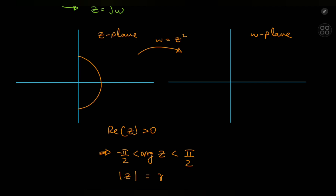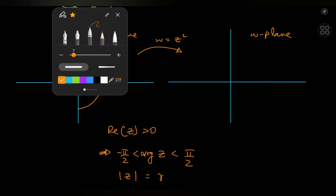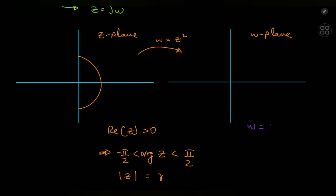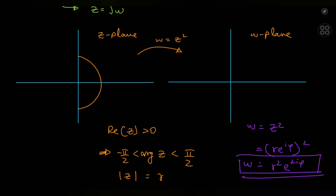How does the semicircle transform under w = z²? Invoking the polar form of z as r·e^(iφ), squaring gives r²·e^(2iφ). This is very insightful: it shows that |w| = |z|², so the modulus of w is the square of the modulus of z. It also shows that the argument of w is just twice the argument of z.